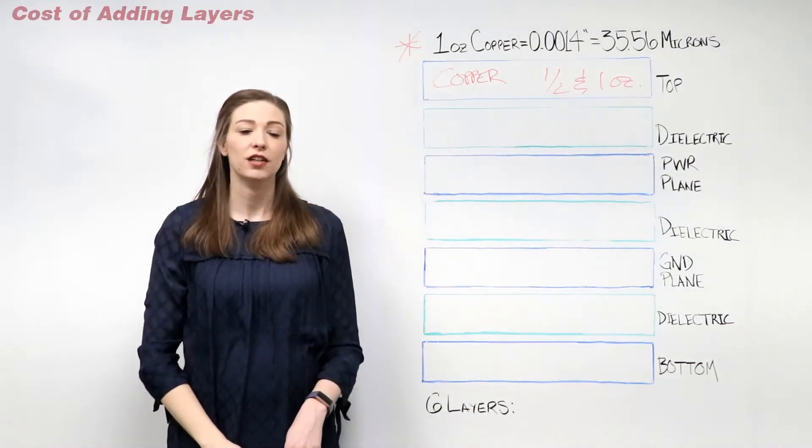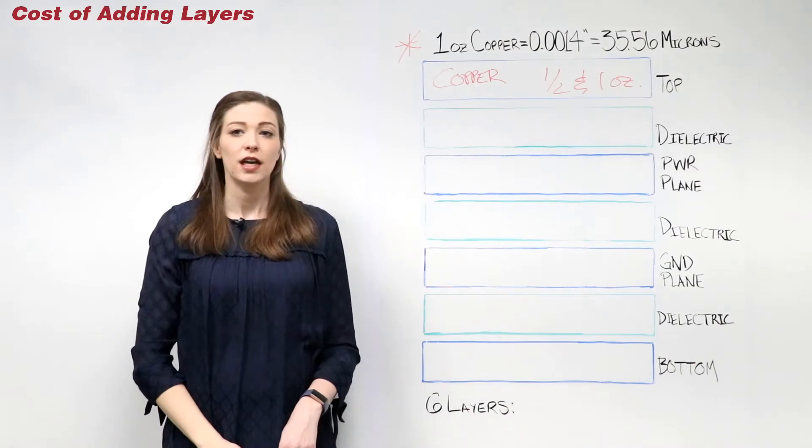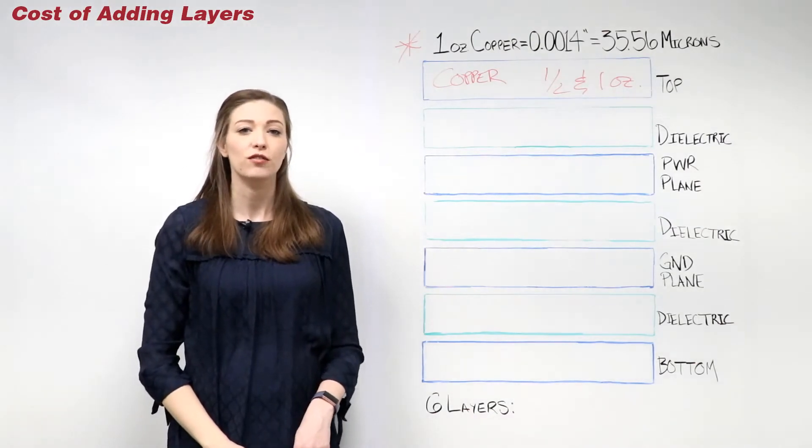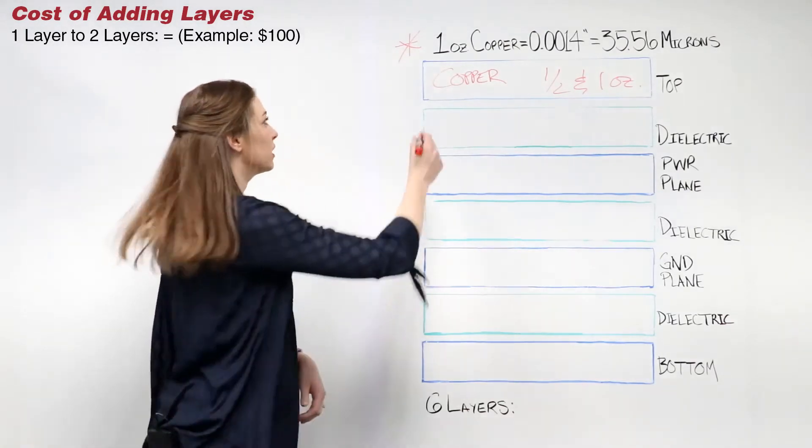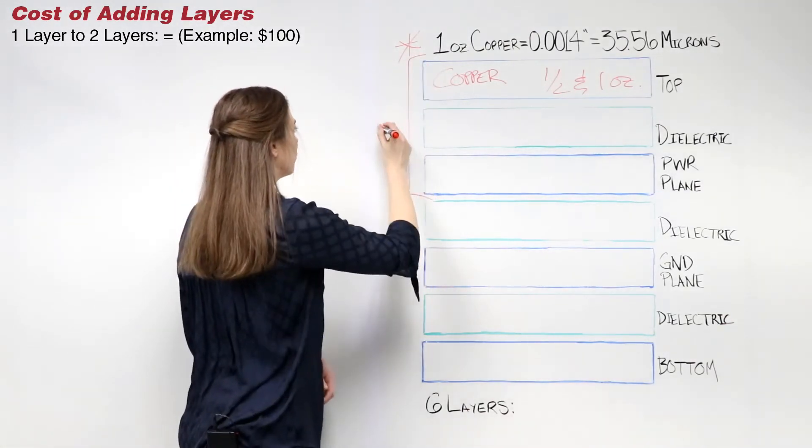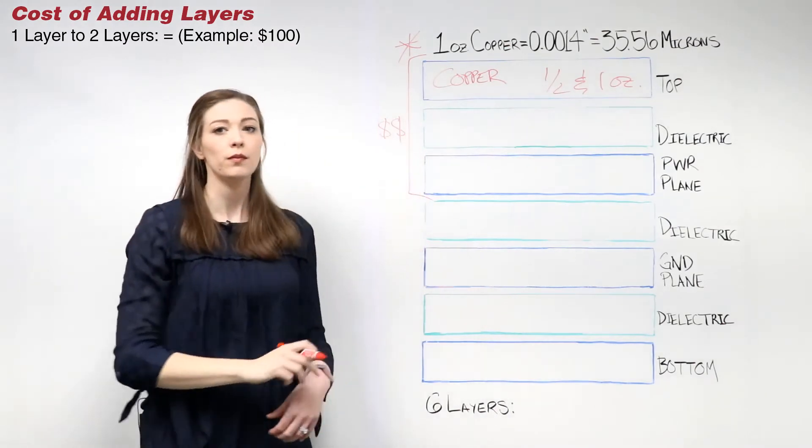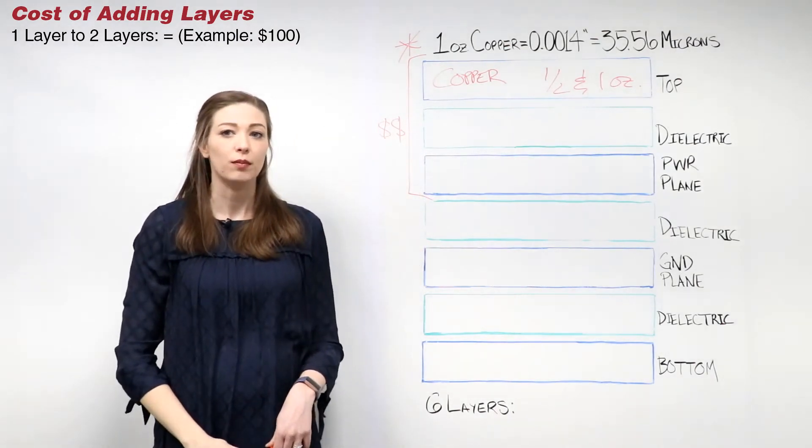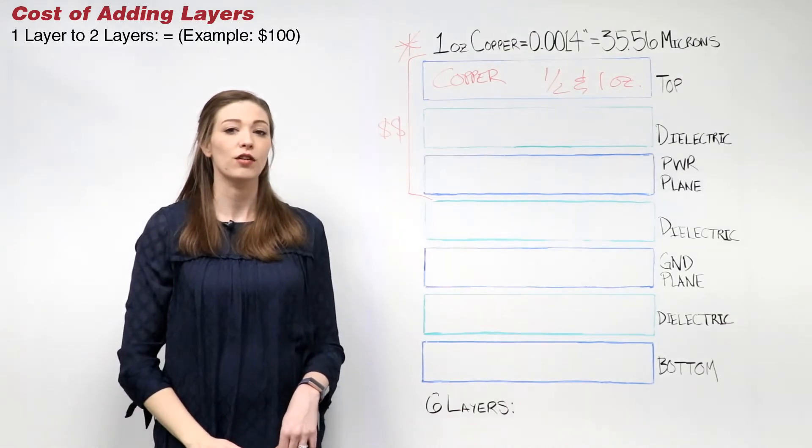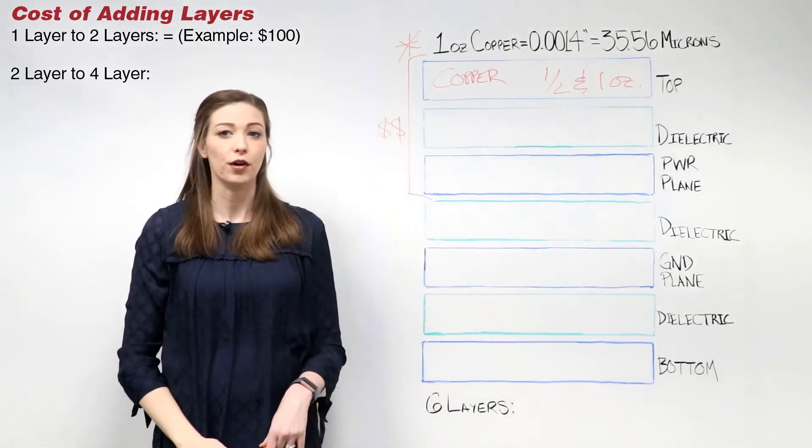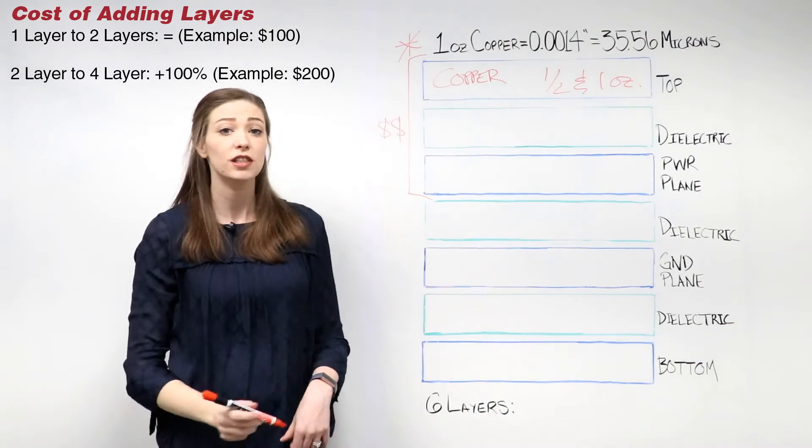The next item to consider is the cost of adding layers. In the fabrication process, the cost of going from a single layer board to a double layer is essentially the same, since additional lamination isn't needed. To create a balanced stack up, layers should be added in pairs. As a rule of thumb, the additional cost of going from a two layer board to a four layer board is 100%, essentially doubling the price.